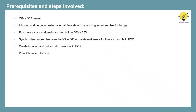We will point the MX record for our domain to EOP so that all inbound external emails are routed to EOP first, so that EOP can filter these emails and then route them to the on-premise exchange organization with the help of the outbound connector. Finally, you need to create a send connector in on-premise exchange server that will send all external emails to EOP. To receive emails from EOP, you do not have to create a receive connector — the default front-end receive connector is sufficient.